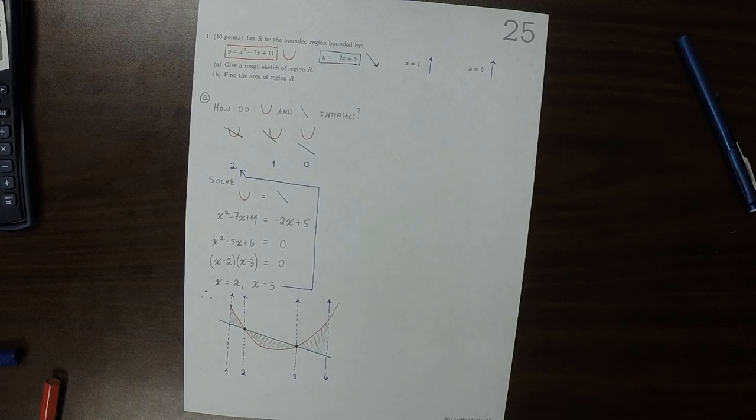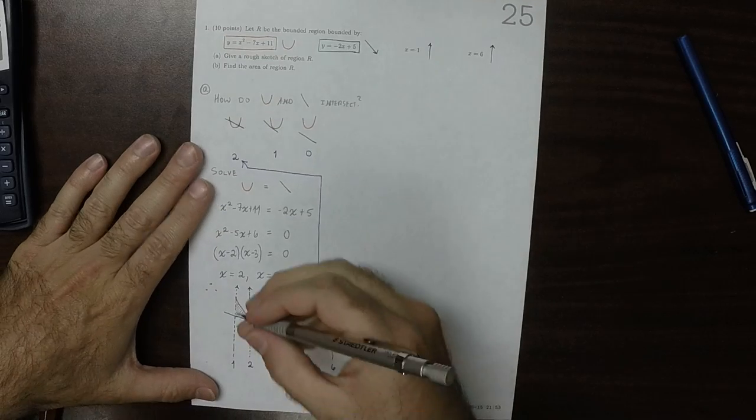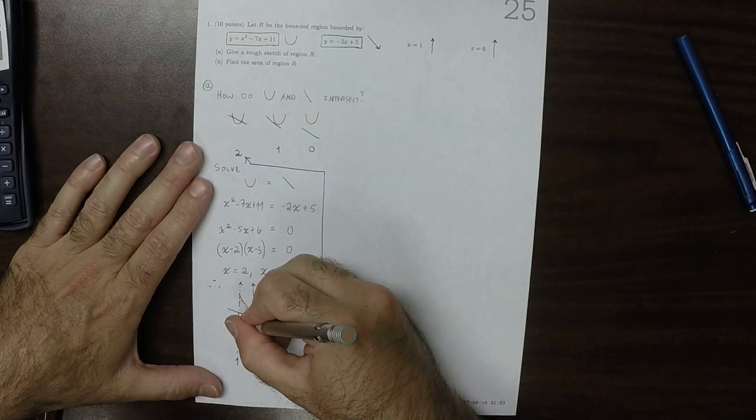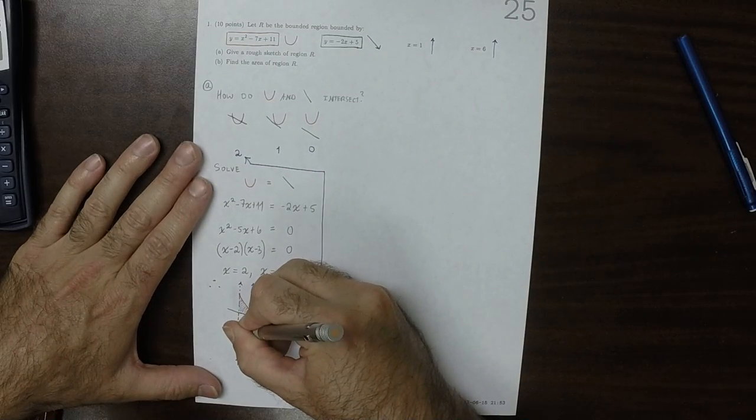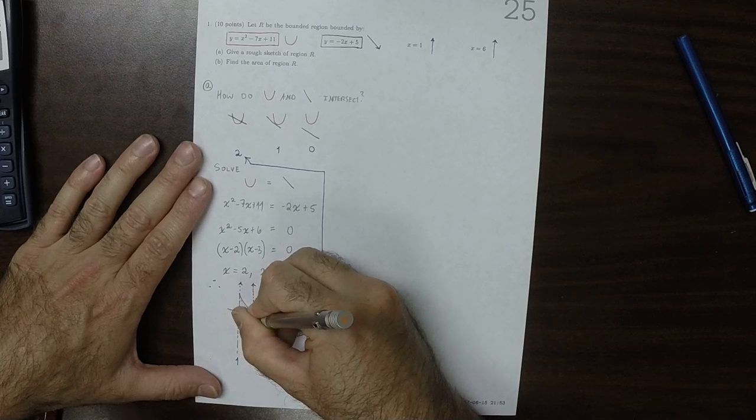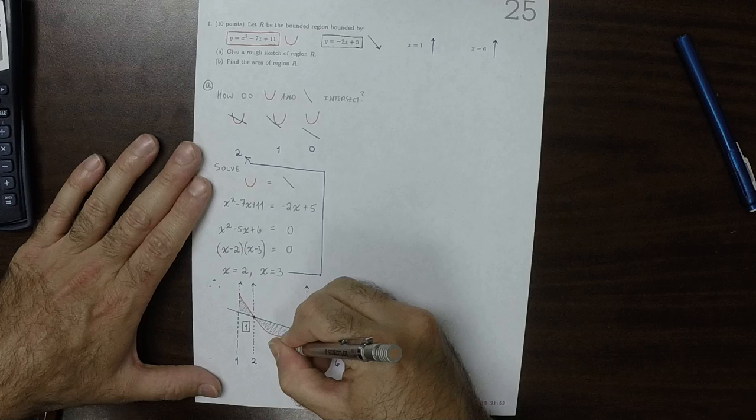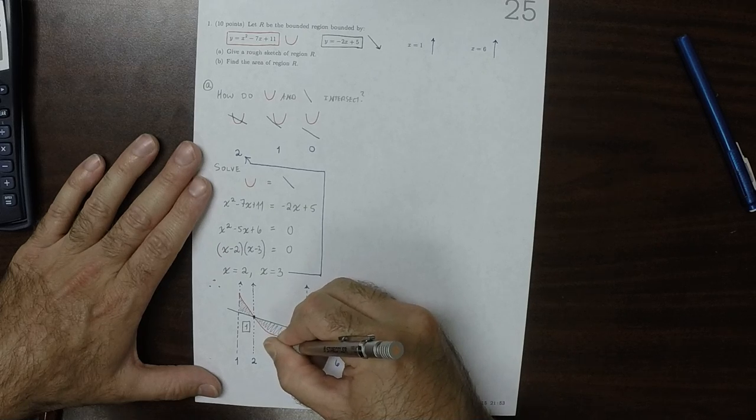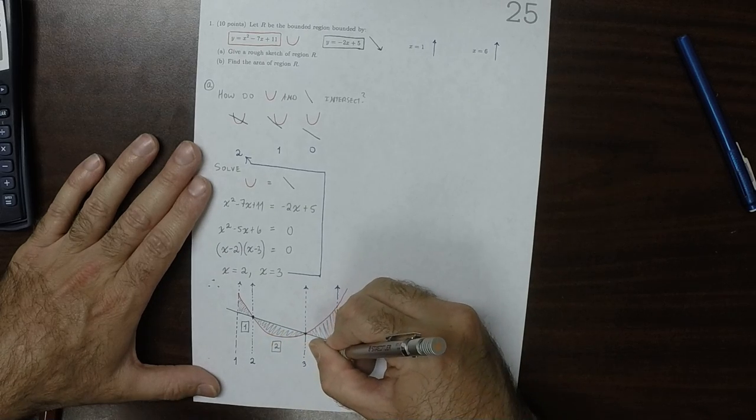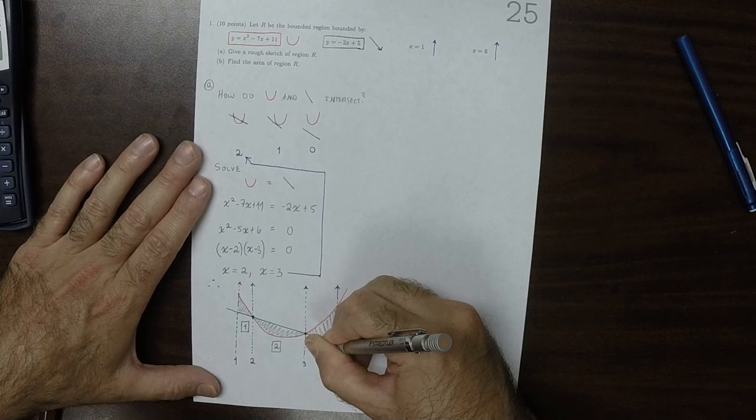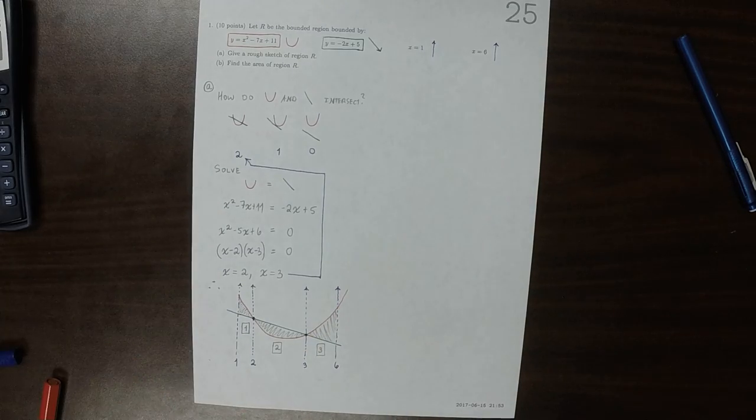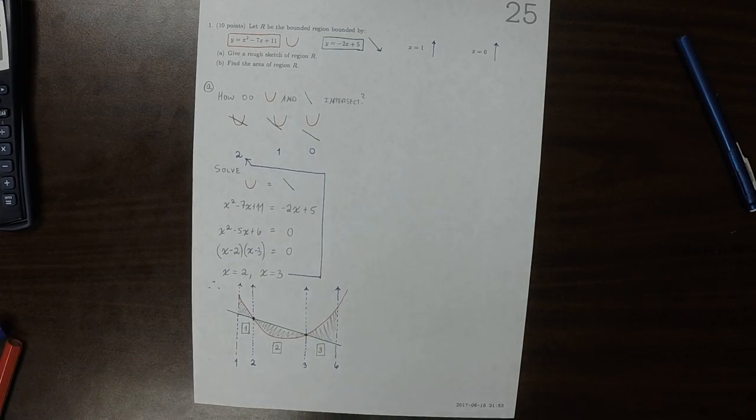Now, we want to find the area of these regions. So then the way I'll do that is I'll call this region, this little piece, region 1, and this one region 2, and this one region 3, and I'll calculate them separately.